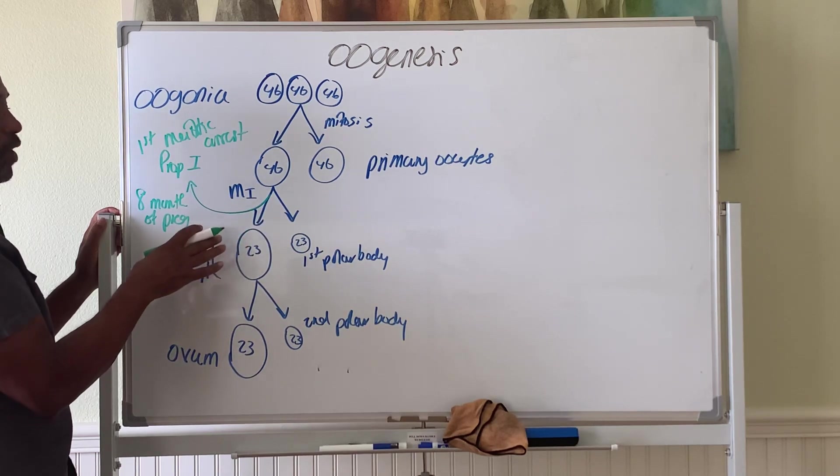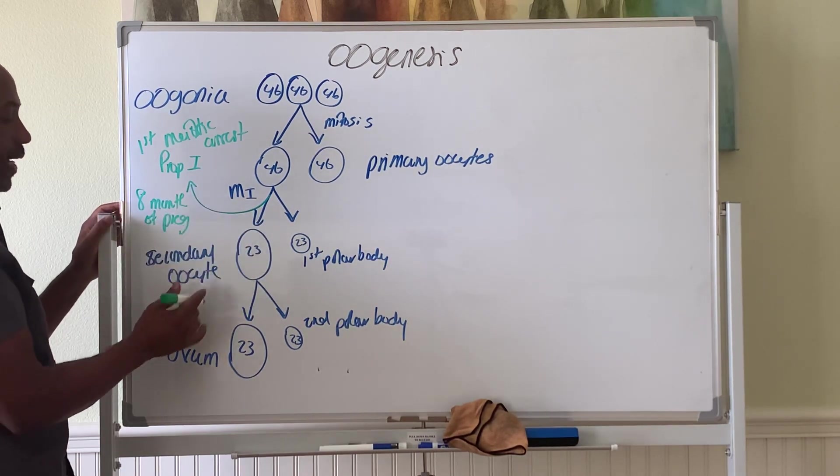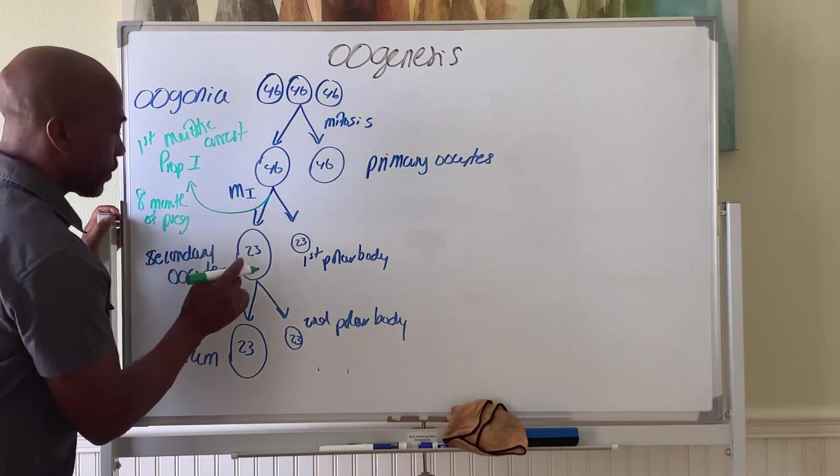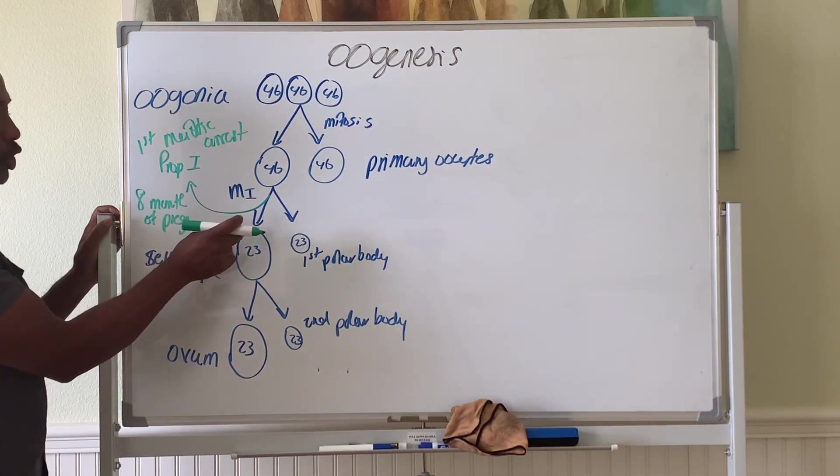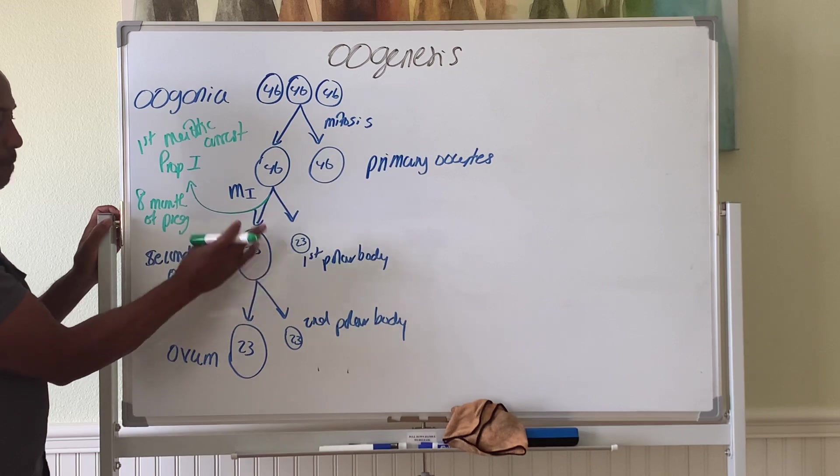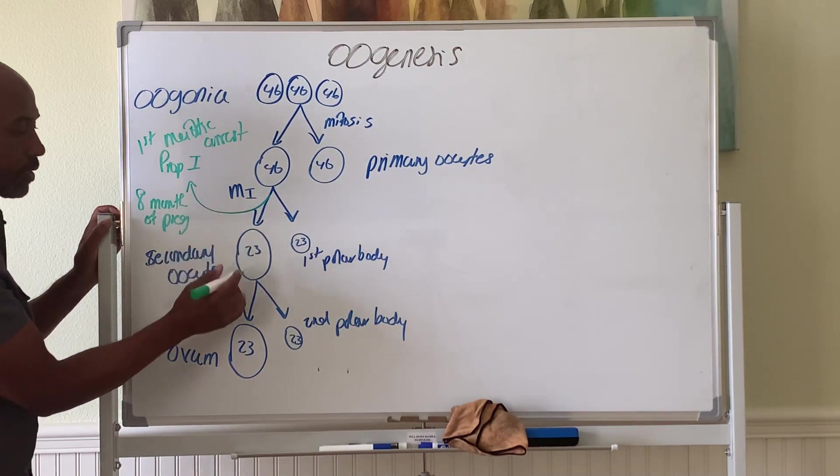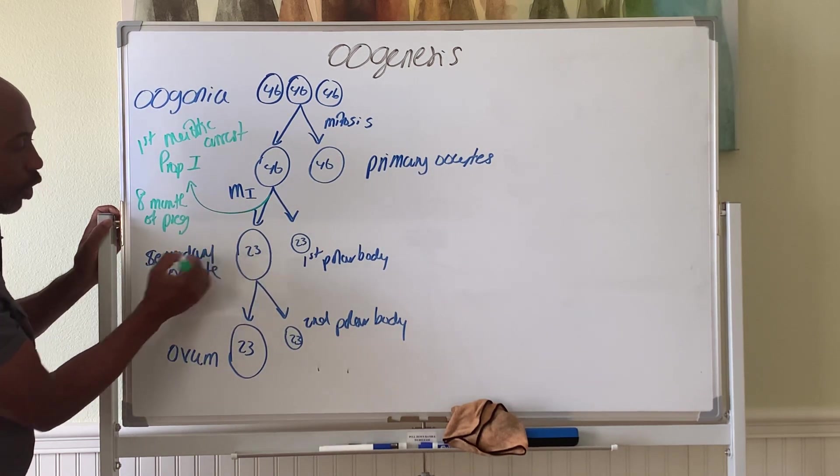And then, after puberty, so you have birth, then puberty, then it begins again. So, at puberty, each month, one or two of these cells will complete meiosis one to form a secondary oocyte.